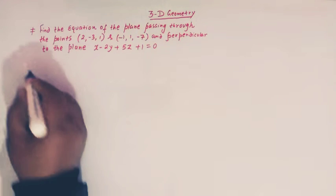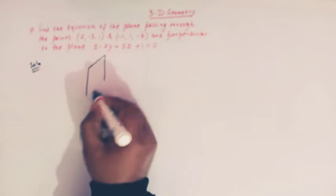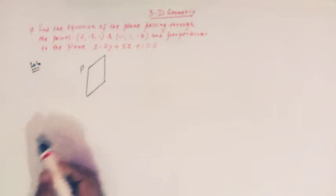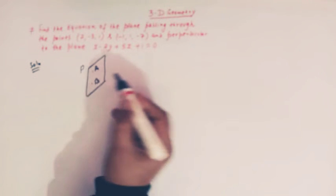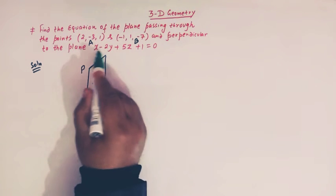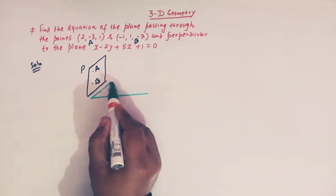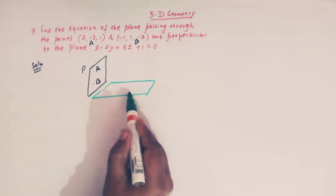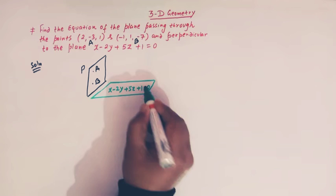We are given a plane and we have to find the equation of another plane which passes through these two points. Let us denote this plane by P. This plane P passes through two points A and B, and is perpendicular to another plane whose equation is x - 2y + 5z + 1 = 0. Let us call this second plane P1.